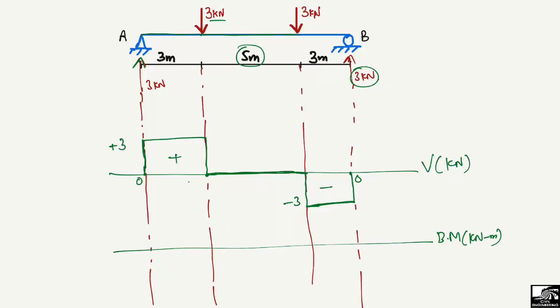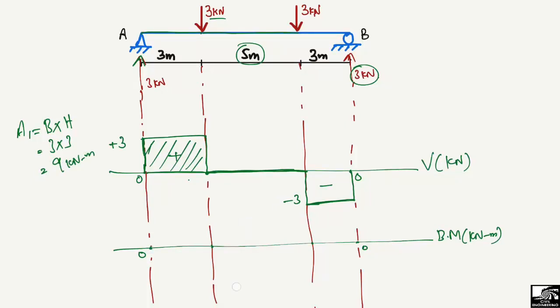Using the shear force diagram to draw the bending moment diagram: the bending moment is found by taking the area of the shear force diagram. The first shear force rectangle has a base of 3 meters and a height of 3 kilonewton, giving an area of 9 kilonewton·meter. So the bending moment at the first load point is plus 9 kilonewton·meter.